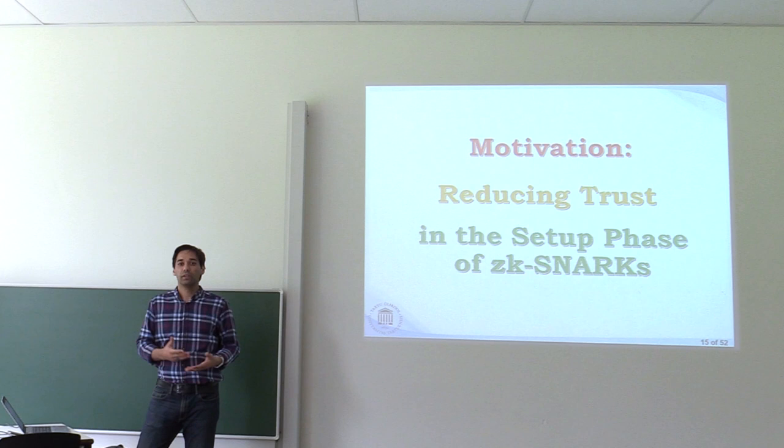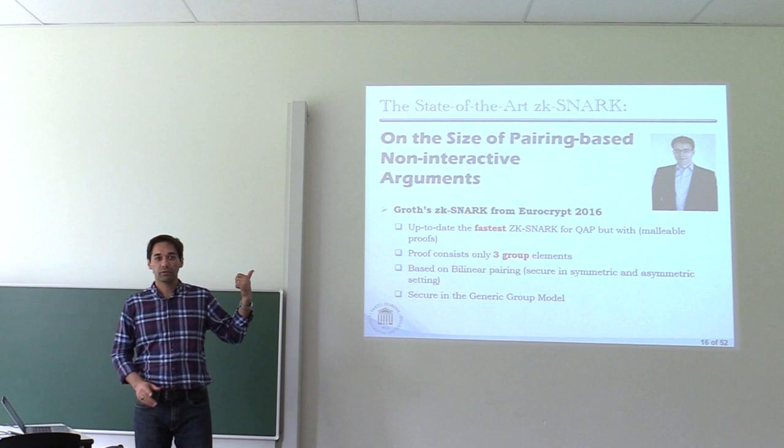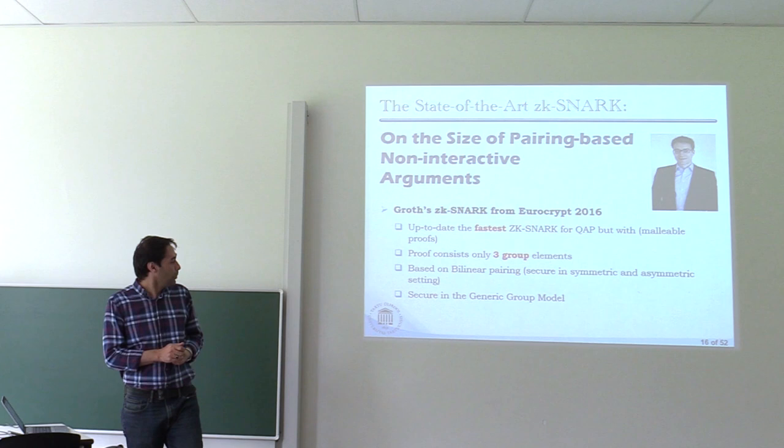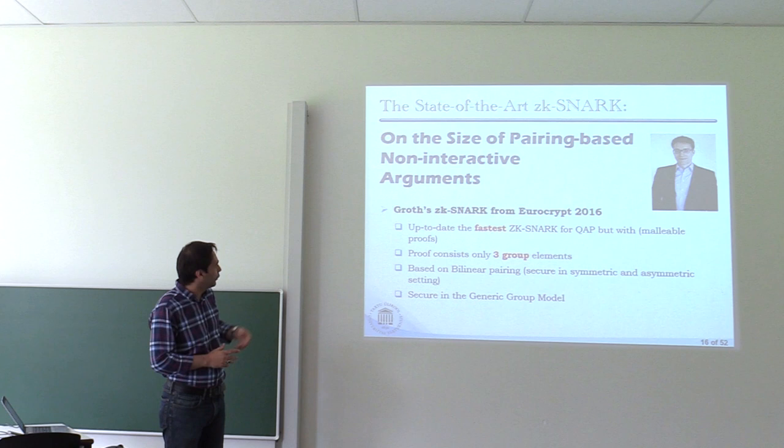Since the best current SNARK is Groth16, we focused on that one. Let me give a very quick overview. Groth16 currently works for QAPs — quadratic arithmetic programs — meaning arithmetic circuits with only multiplication and addition gates. This Groth scheme is inefficient because it was constructed for SAPs, square arithmetic programs, where circuits only have squaring and addition. For a multiplication gate you need two squaring gates: (A minus B)² minus (A plus B)² divided by 4. That is why it is not efficient. We tried to give a new SNARK which works based on QAPs, not SAPs.